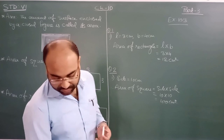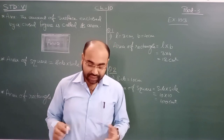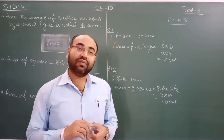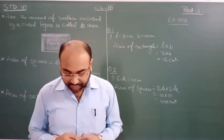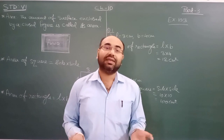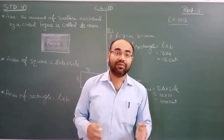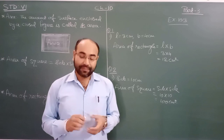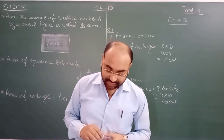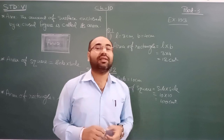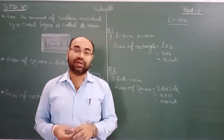Question number three: the length and breadth of rectangles are given — 9 meters, 6 meters and similar pairs. After solving all three, we are asked which one has the largest area and which one has the smallest area. For example, if 4 meters and 14 meters give the largest area, we would write that down. That is what we have to do in question number three.